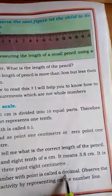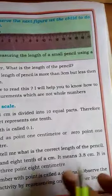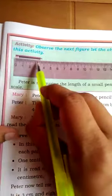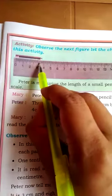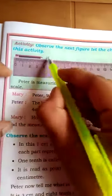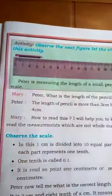The number with a point is called a decimal. That is, the first 3, then 8 small divisions. Therefore, its length is 3.8 centimeter.